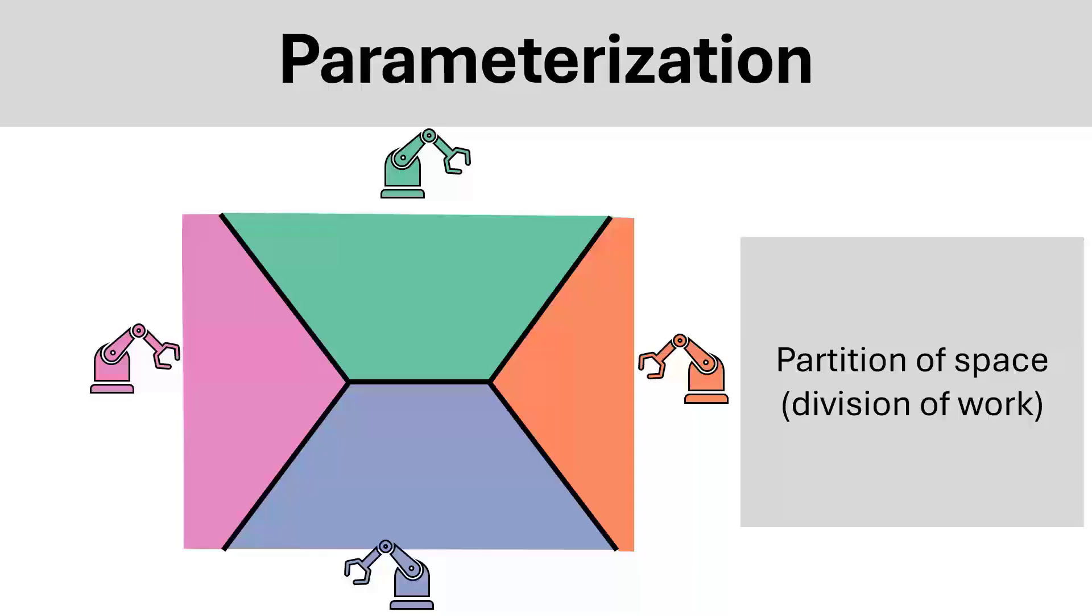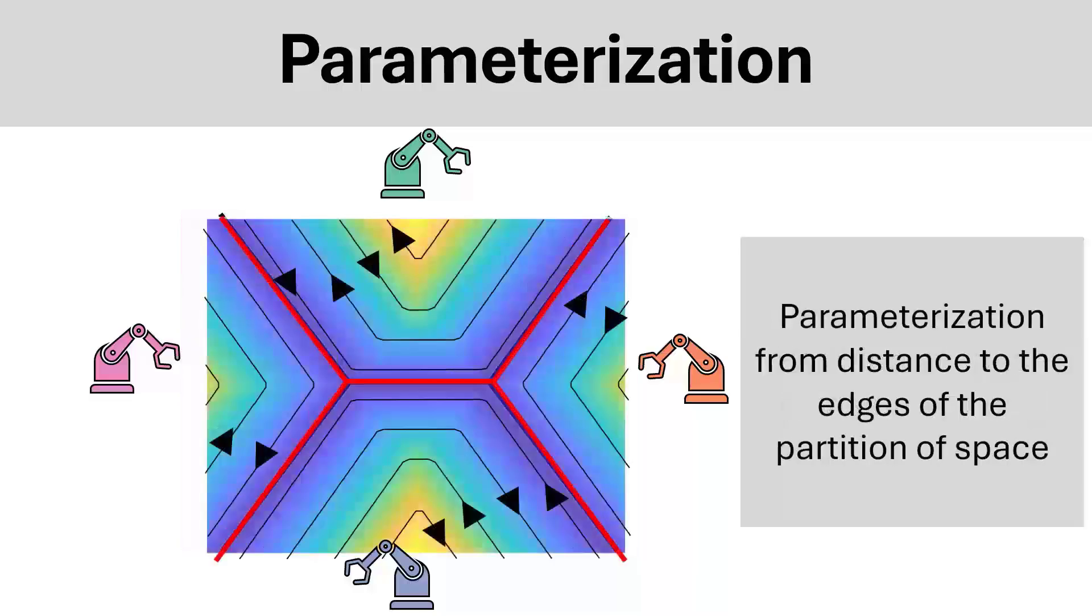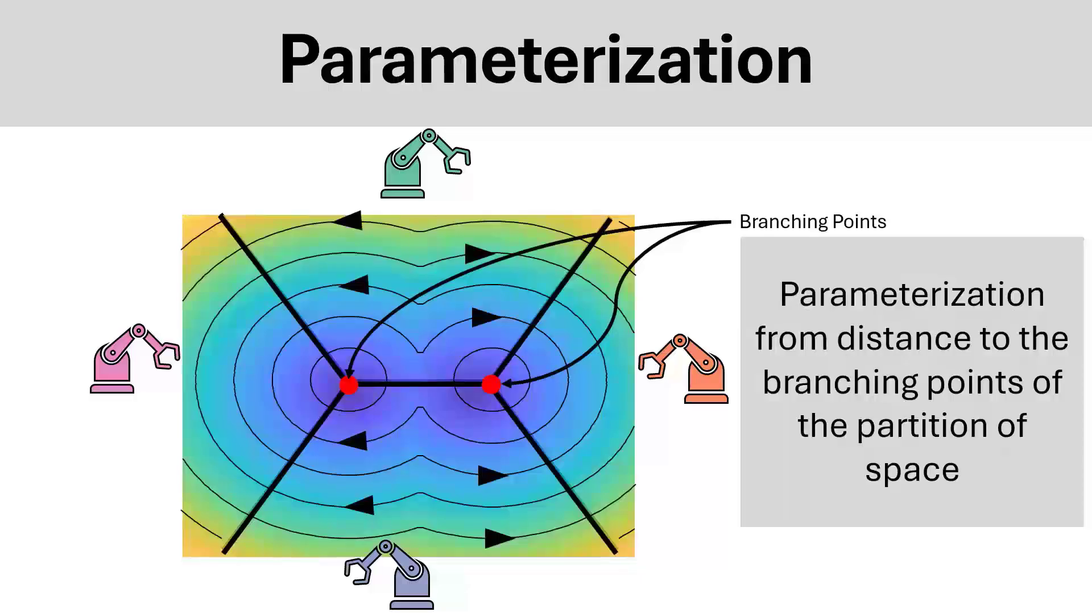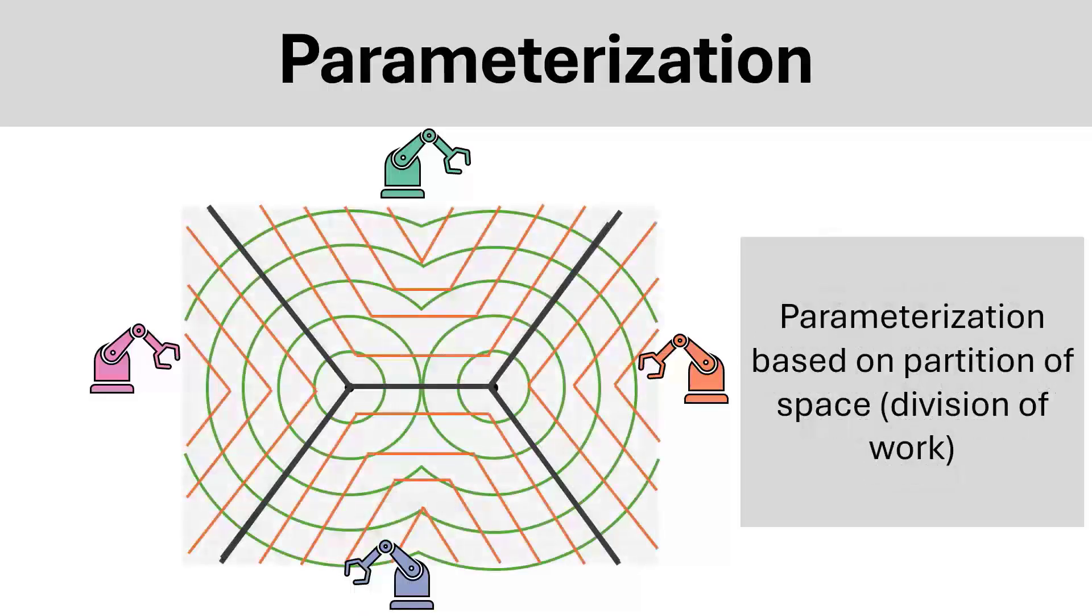Using the partition of space, we can define the parameterization based on the distance to the edges of the partition. We can also derive a parameterization from the distance to the branching points of the partition of space. In this case, this partition has two branching points, which we can create a parameterization from equal distances to the branching points.